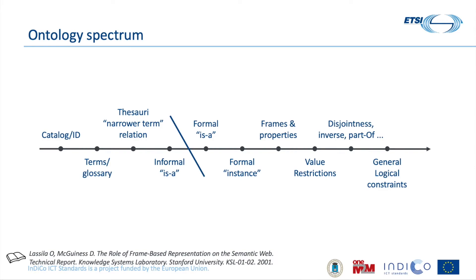When we talk about ontology, we have different approaches according to the expressiveness we want to achieve. For example, this is the ontology spectrum defined by Lassila and McGuinness, where we can see from the left — from very informal approaches with low semantics — to other approaches that are increasingly adding semantics, adding more inferencing capabilities and constraint checking capabilities. So we have a wide range of expressiveness that we can use when we define ontologies.